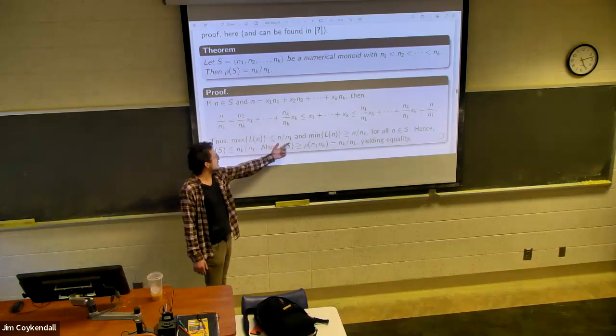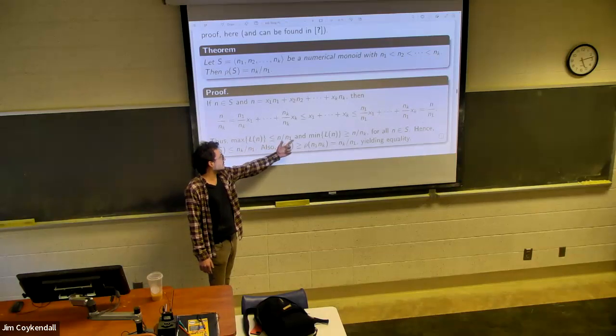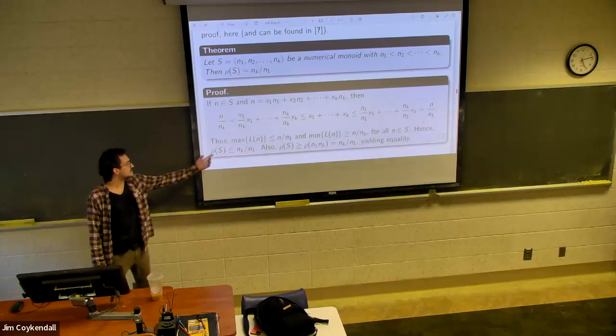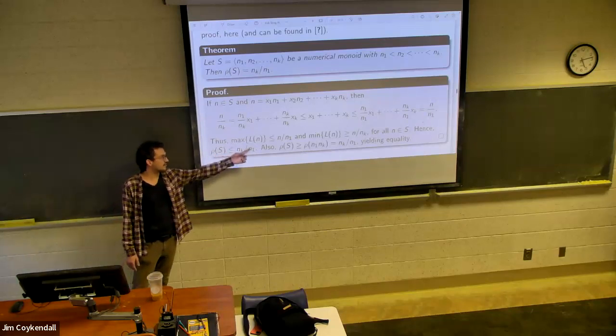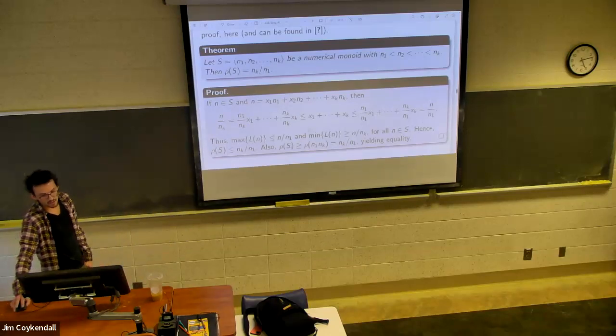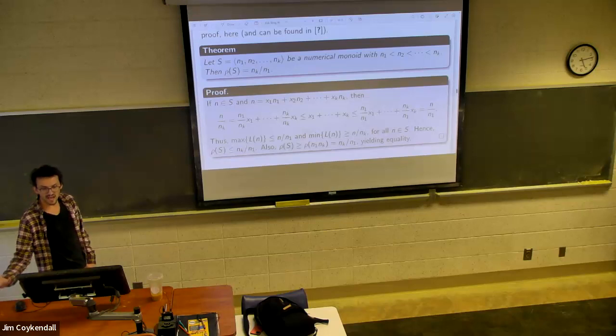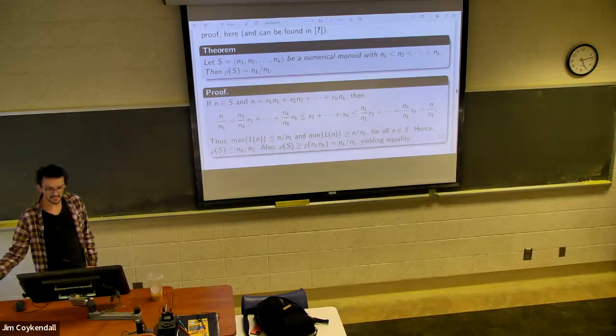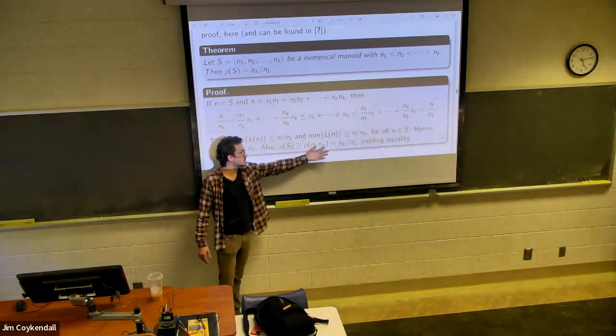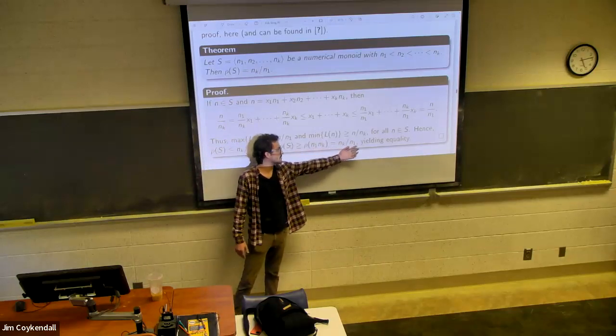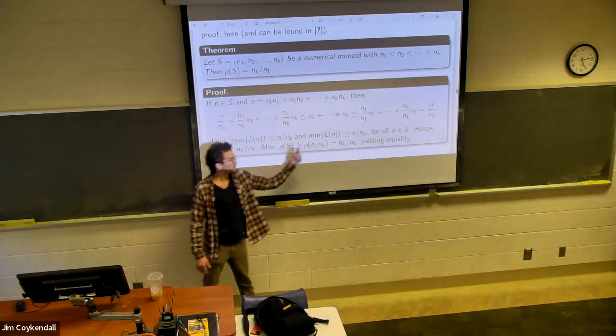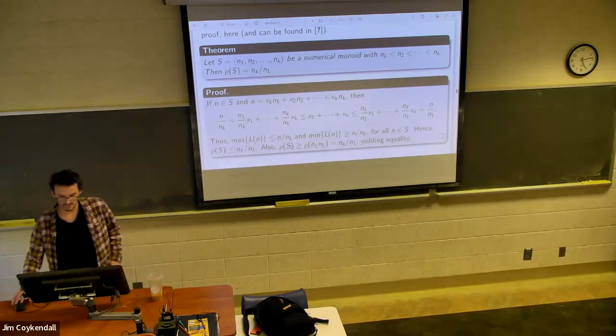So then, okay, max of LN is less than or equal to N over N1. Minimum is greater than or equal to N over NK. And so rho of S is less than or equal to NK over N1. And then to get equality, well, since rho of S is the sup of rho of all the elements, rho of S has to be greater than or equal to rho of N1 times NK, which turns out to be NK over N1. So given this plus this, we get the equality and the proof is done.